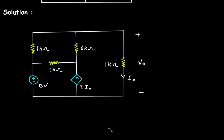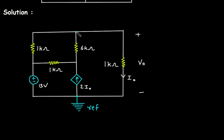Now, first of all, we will make the ground. Here, at the bottom, we assume this as a reference node or ground. So this is our reference node. Now, let's say this is node A, this is node B, and this is node C.